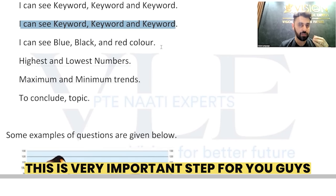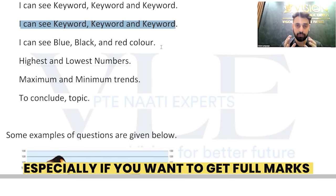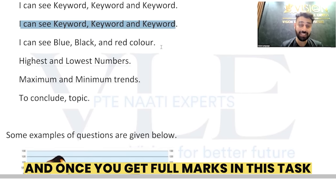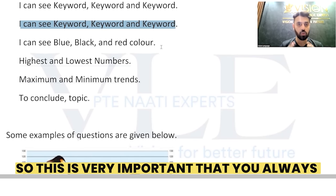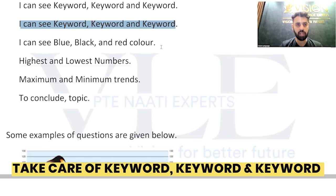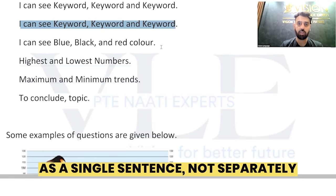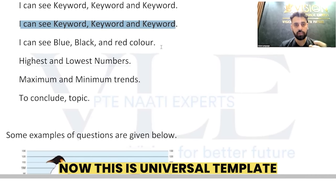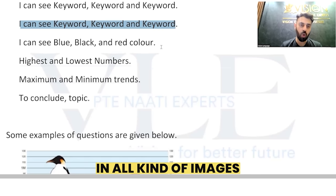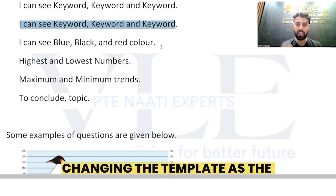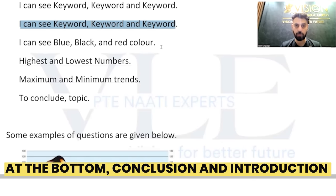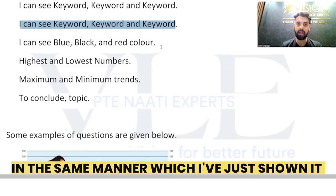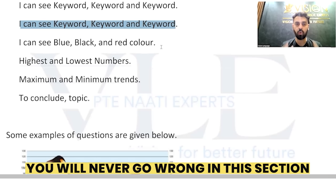This is a very important step, especially if you want to get full marks in this Describe Image task. Once you get full marks here, you're going to get 90 overall in speaking as well, as long as you take care of the other tasks too. Always treat 'keyword, keyword, and keyword' as a single sentence, not separately. This universal template works for all kinds of images — you don't need to change it as different image types come up.